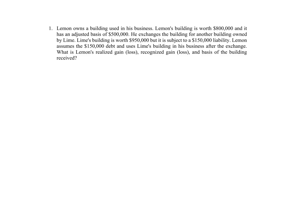We have Lemon, who owns a building used in business. Lemon's building is worth $800,000 and has an adjusted basis of $500,000. He exchanges a building for another building owned by Lime. Lime's building is worth $950,000 but is subject to a $150,000 liability. Lemon assumes the $150,000 debt and uses Lime's building in his business after the exchange. What is Lemon's realized gain or loss, recognized gain or loss, and basis of the building received?